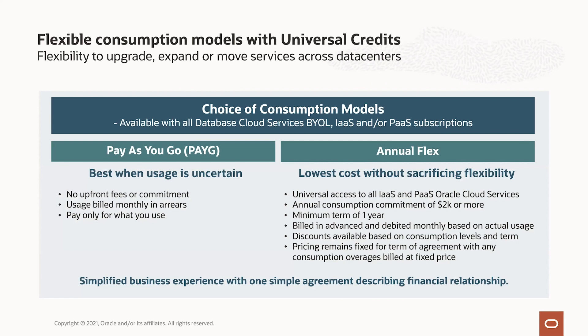The consumption for database cloud services is using the pay-as-you-go model with universal credit — no upfront fees or commitment, usage is billed monthly in arrears and you pay only for what you use. Or with our annual flex, which has a minimum term of one year at a low entry point of $2,000 or more, and you get universal access to all of our PaaS cloud services and infrastructure as a service. The pricing is predictable — you get the same prices no matter where you deploy your databases, and you can consume universal credits at your own pace during the 12 months.